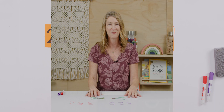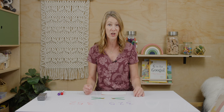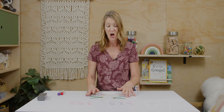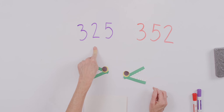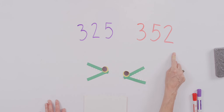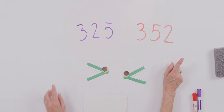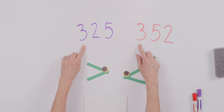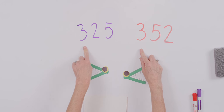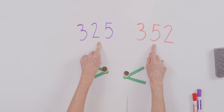Let's try another one. In our last number, it was easy to take a look at the hundreds and figure out which number was greater and which was less than. But let's take a look at these numbers. Would you read the purple number out loud for me? Good job! Three hundred twenty-five. Now read the red number aloud. You got it! Three hundred fifty-two. So last time, we found ourselves looking to the hundreds to see which number was greater. Does that help us in this case? It doesn't, so we have to move to the next value column, which is the tens column.